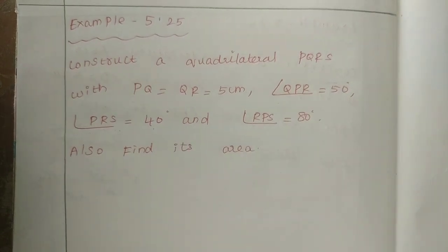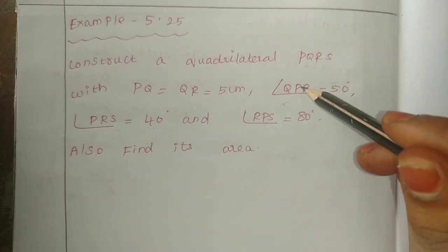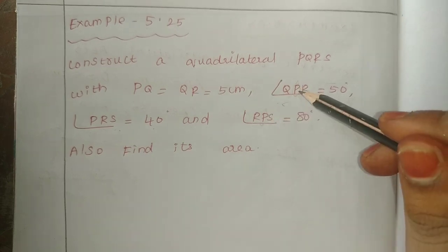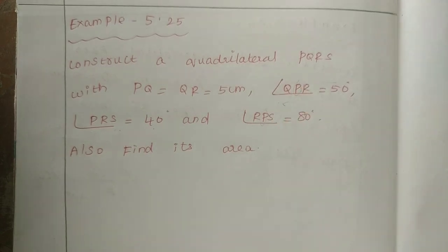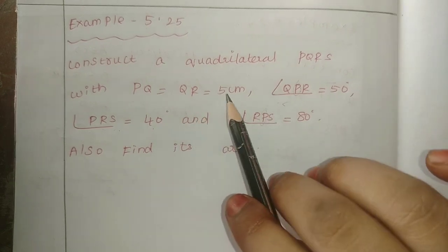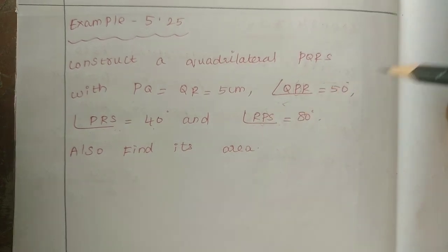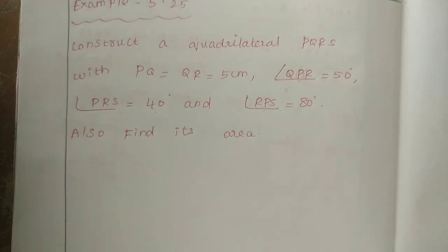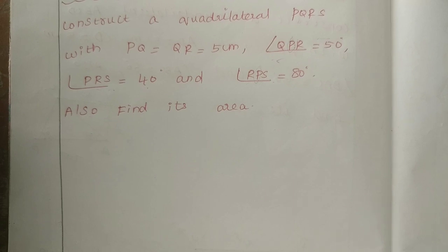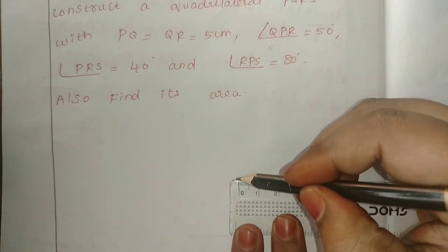So as usual, we will look at the rough diagram first. We have three angle values given. We will try to do the rough diagram. The rough diagram starts with PQ, which is 5 centimeters.